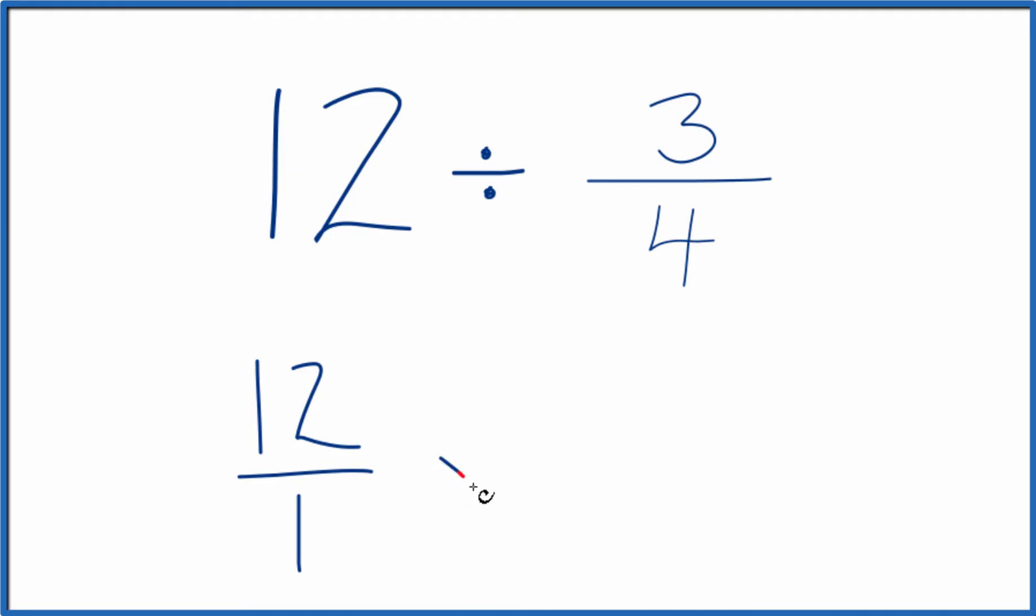Then instead of division, let's multiply by the reciprocal of 3 fourths. When we take the reciprocal for a fraction, we move the numerator to the bottom, denominator to the top. So we have 4 over 3. So when we multiply fractions,